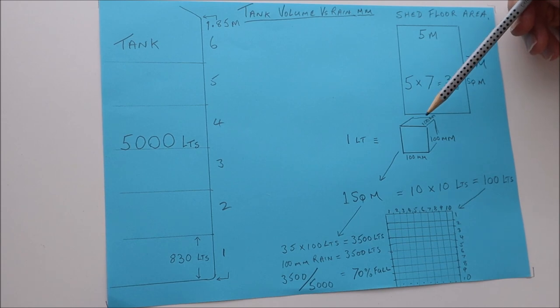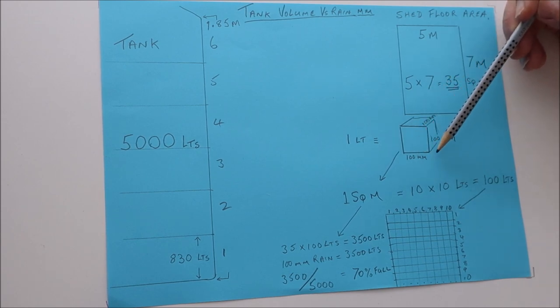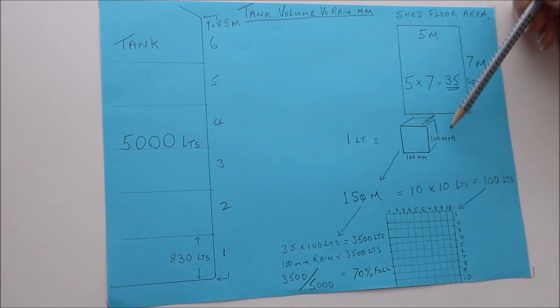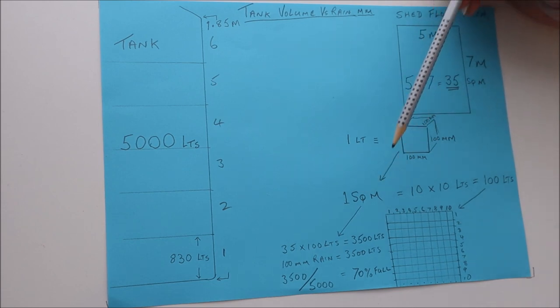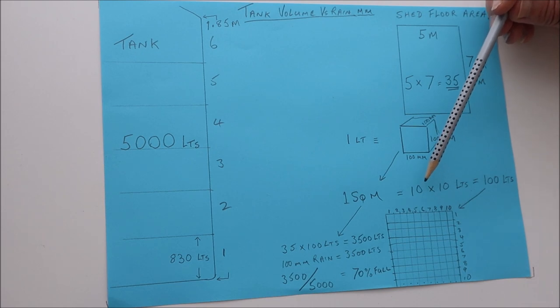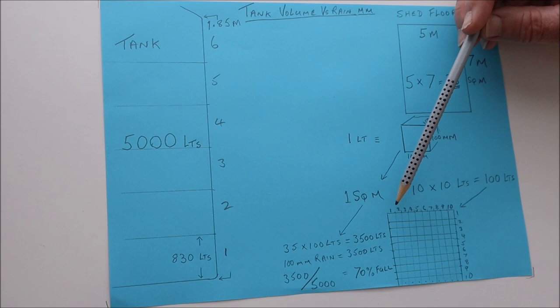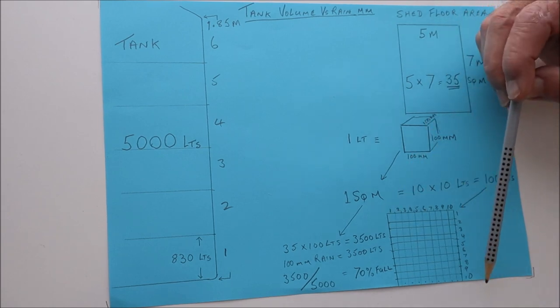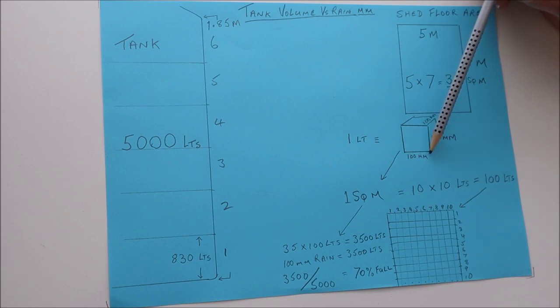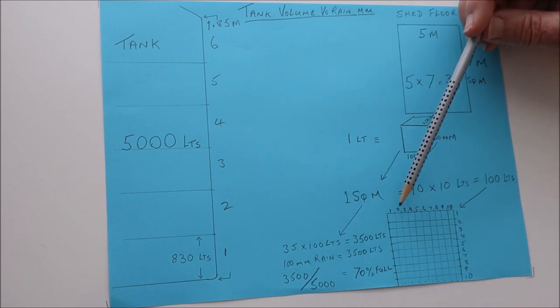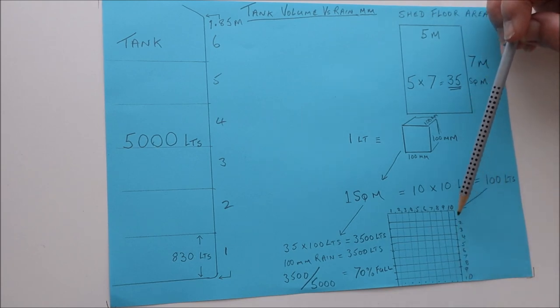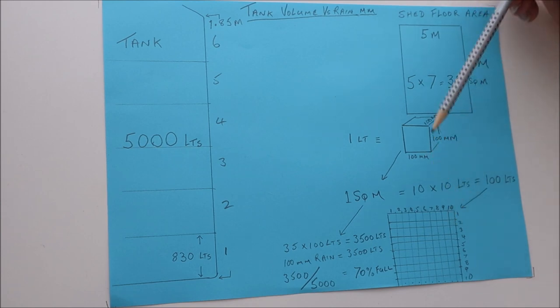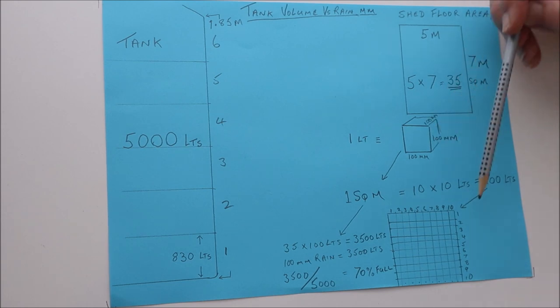A liter, as we all know, is 100 millimeters by 100 millimeters by 100 millimeters. That's a cubic measurement which is equivalent to a liter. If we take one square meter of the floor and see how many liters we can pack into that, one square meter is a thousand millimeters by a thousand millimeters. If you take the dimension of our little cube here, that's 100 millimeters, so 100 into 1000 goes 10. We could stack 10 liters that way and 10 liters that way in a square meter, which gives us 100 liters in total.